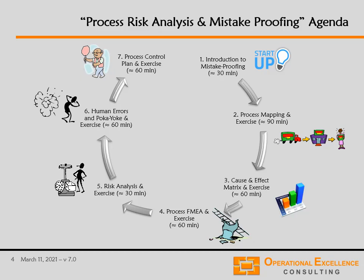We have divided this eLearning module into seven sections. The first section covers an introduction into mistake proving. Then we're going to talk about the process variables map — how to do one, how to develop one for the process that we are analyzing. Then we're going to discuss the cause and effect matrix and also have some examples there.